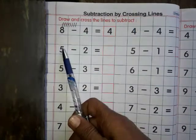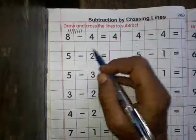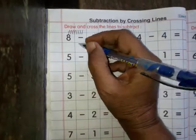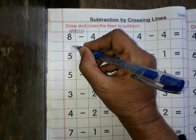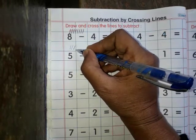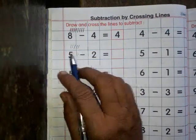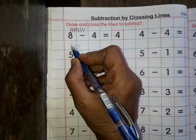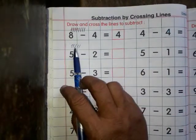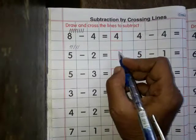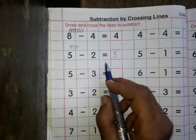इसी प्रकार से, यहां है 5 — हम 5 lines बनाते हैं: 1, 2, 3, 4, 5. 5 lines, minus 2 — 2 को cross कर दिया: 1, 2. 2 को cross कर दिया, कितने बचे? 1, 2, 3. Answer is 3. 5 minus 2 is equal to 3.